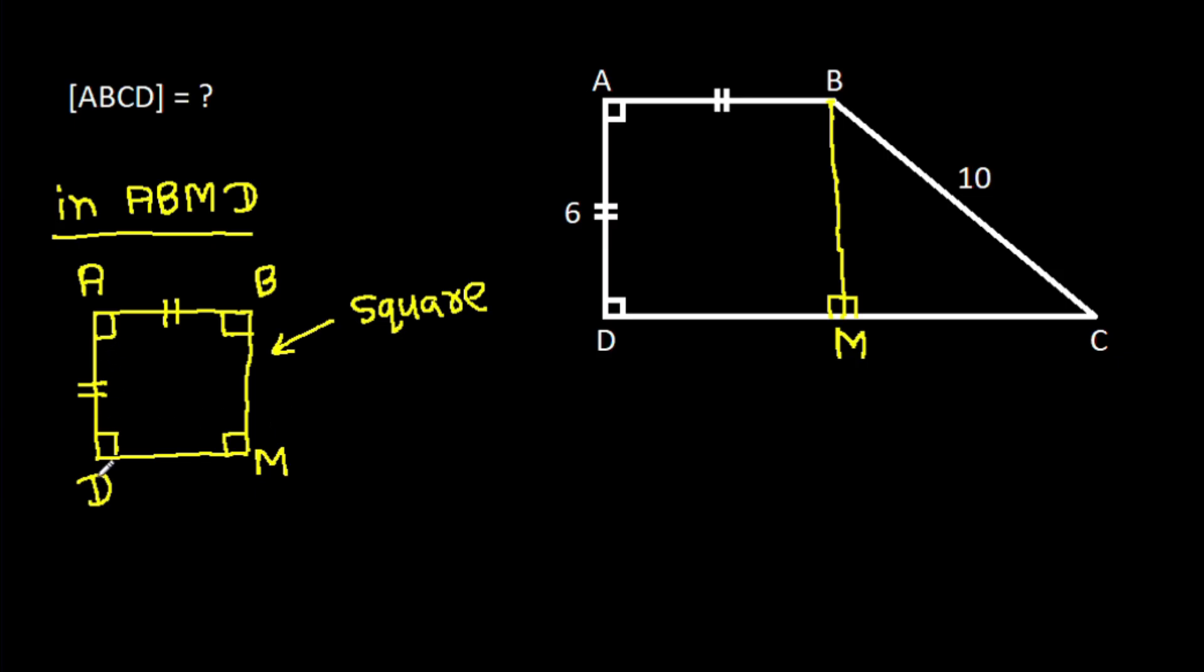And AD is 6, that means AB, it will be 6, BM is 6 and MD, it will be 6. So, AB is 6, BM is 6, MD is 6.